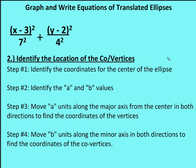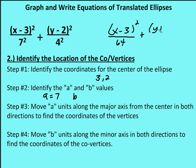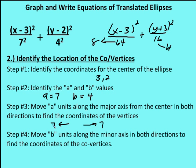Next, I'll identify the a and b values. The a value is the larger of the two, so a equals 7. Remember, a squared is 7 squared — don't confuse the two. My a value is 7, my b value is 4. I'll move a units along the major axis from the center in both directions to find the vertices, and b units along the minor axis in both directions to find the co-vertices.